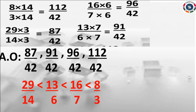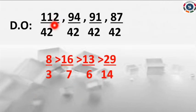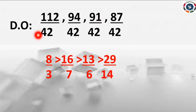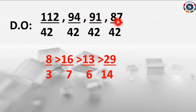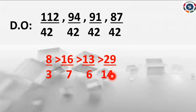For descending order, write the fractions from big to small using the same values: 112/42, 96/42, 91/42, 87/42. All denominators are same — like fractions. Arrange numerators from big to small. So descending order: 8/3 > 16/7 > 13/6 > 29/14.